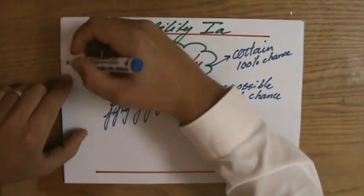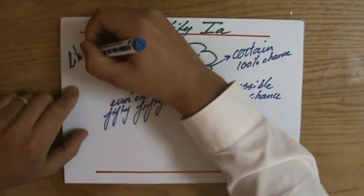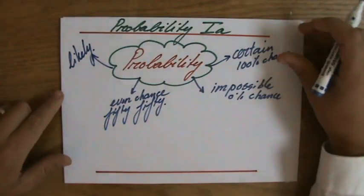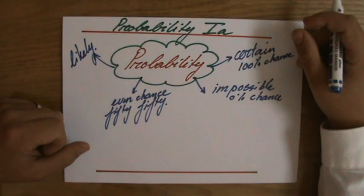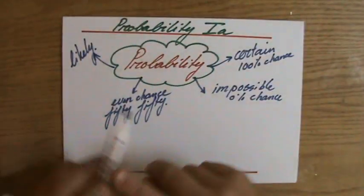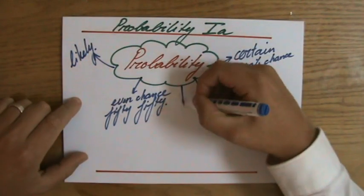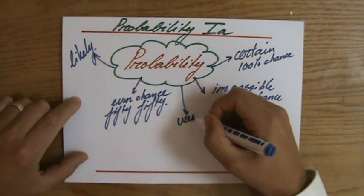And then you have words between impossible and even chance and between even chance and certain. For instance, an event which is likely to happen. I'm in Egypt today. It's quite likely that the sun is going to shine. It's not absolutely certain, but it is likely. Or actually, it is very likely.